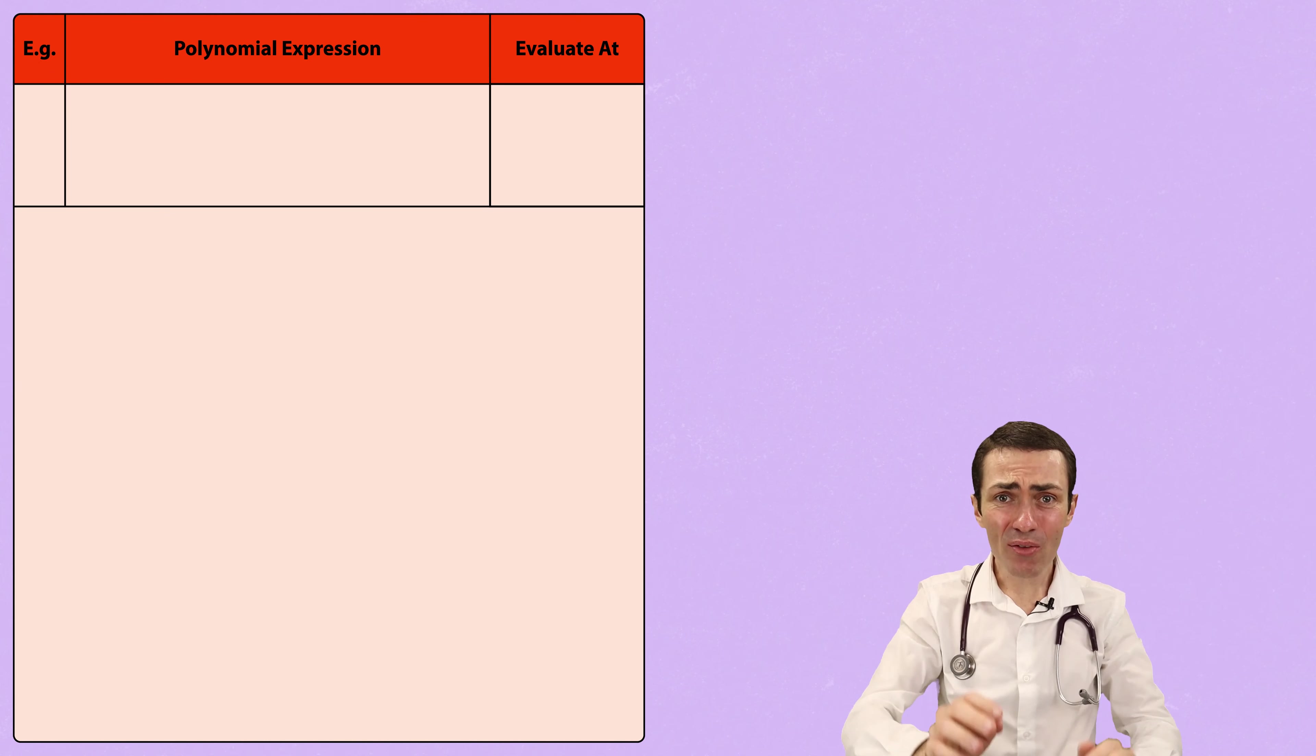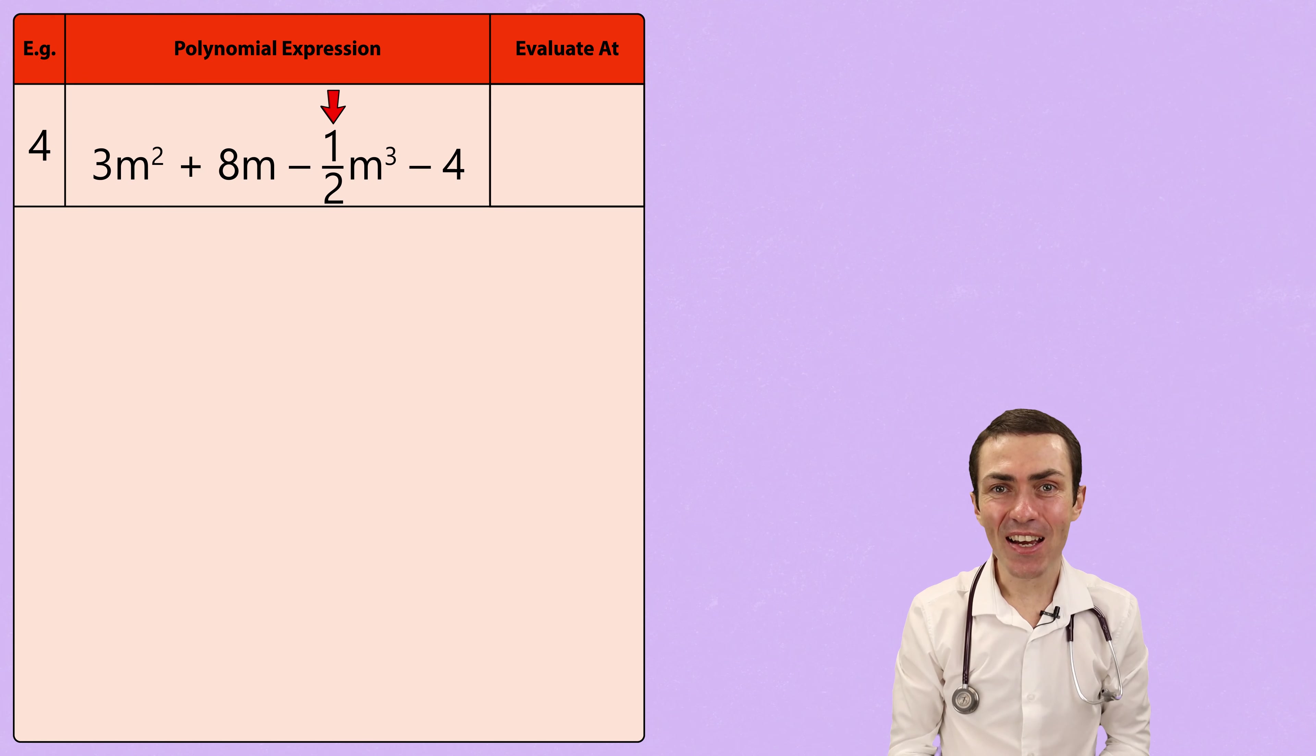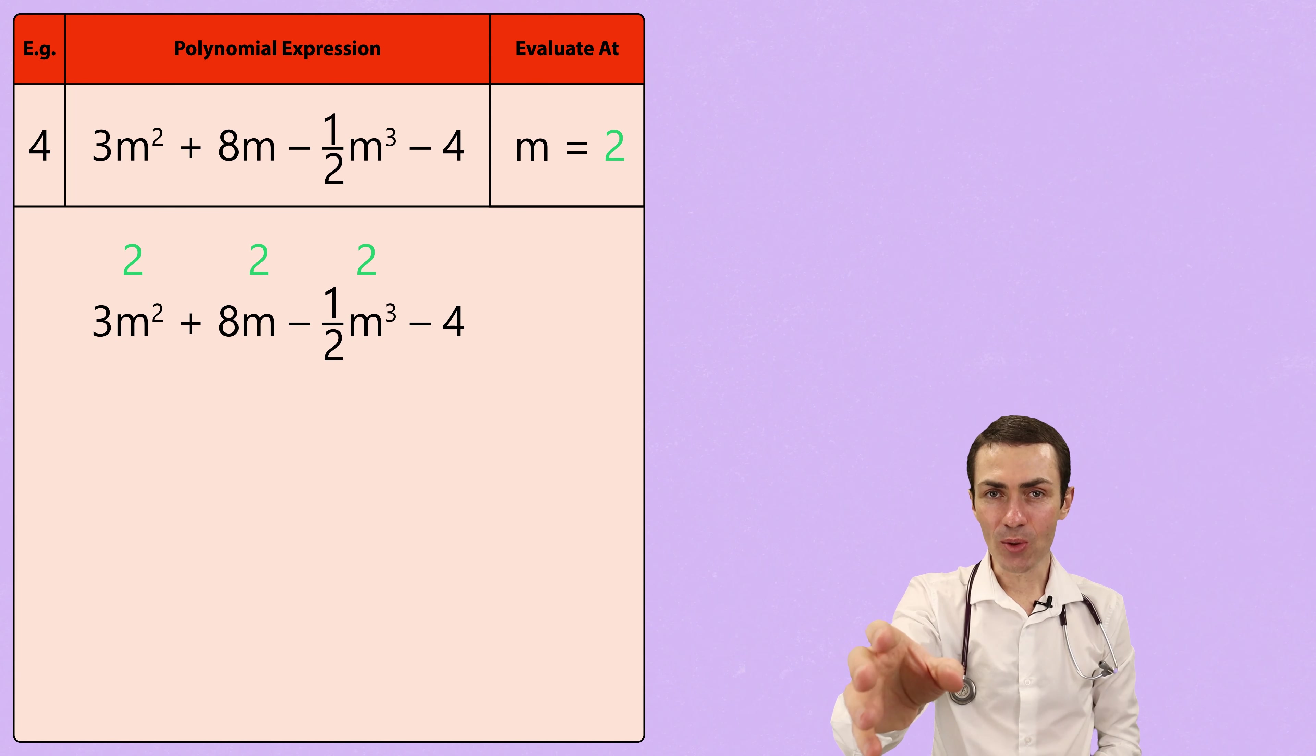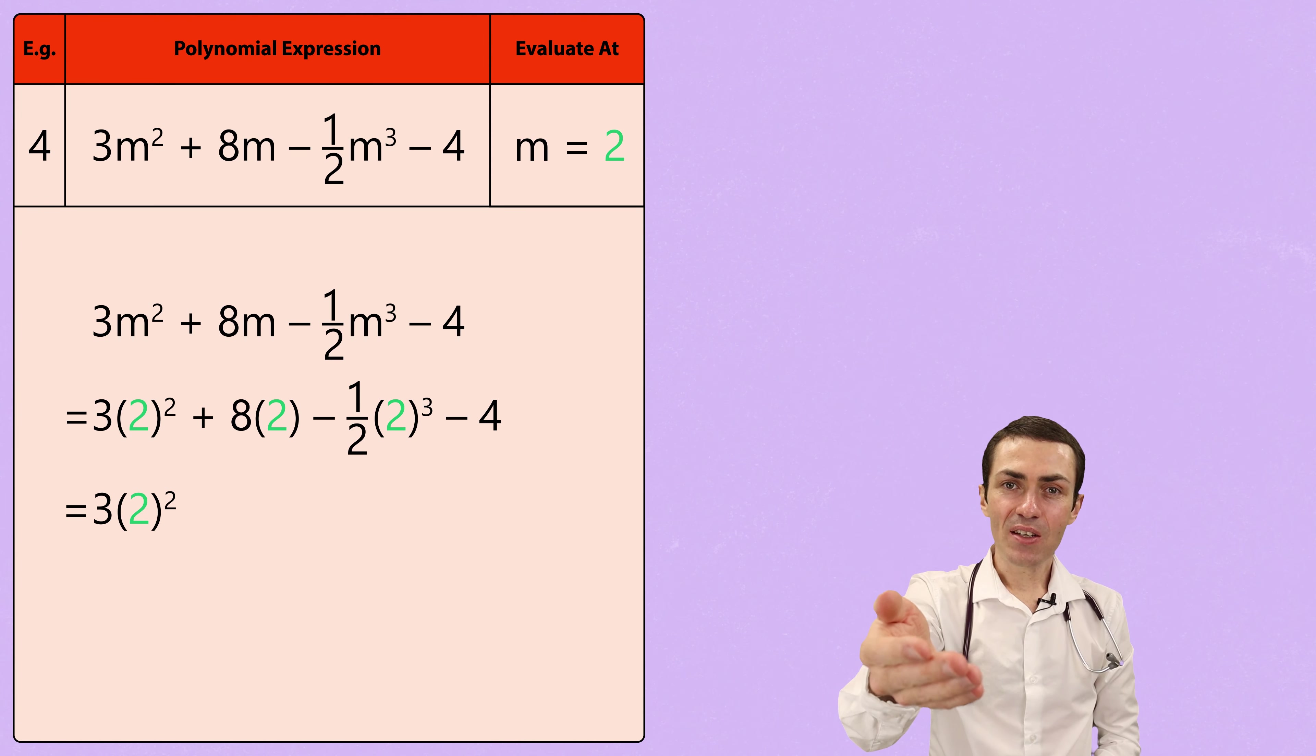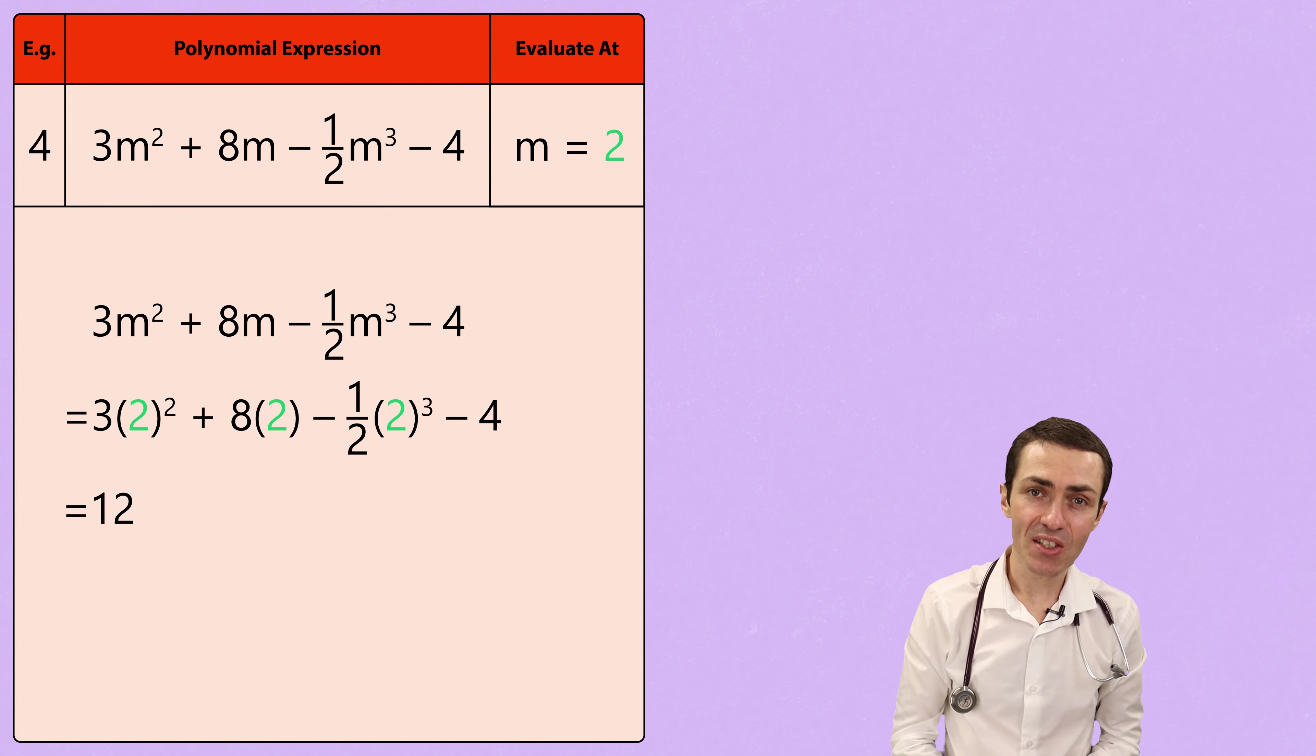Now, don't be scared if we are given a polynomial that contains 4 terms, where one of those terms has a fraction as a coefficient. If we are asked to evaluate this polynomial at m equals 2, we simply follow the same process and substitute m with 2. Starting at the first term, 2 squared is equal to 4, and 3 multiplied by 4 gives us 12. Next, 8 multiplied by 2 is simple, that gives us 16.